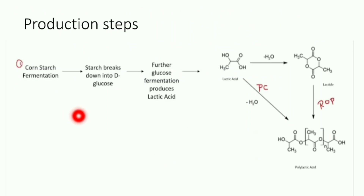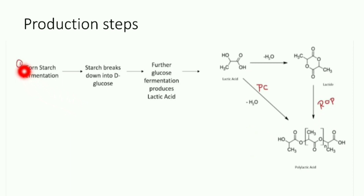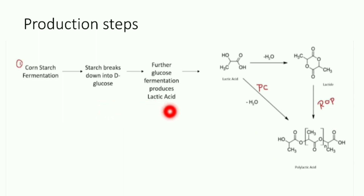Next come the steps for production. The process is straightforward because polylactic acid is an aliphatic polyester generally extracted from starch or corn. In the first step, we have cornstarch fermentation, which gives D-glucose. When this D-glucose is further fermented or processed, it gives lactic acid.